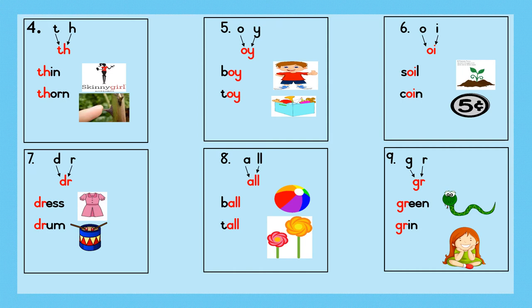Example 9. G-r-gr. Gr-in: green. Sentence: The snake is green. Gr-in: grin. Sentence: The little girl likes to grin.